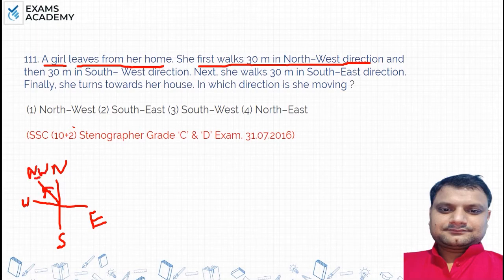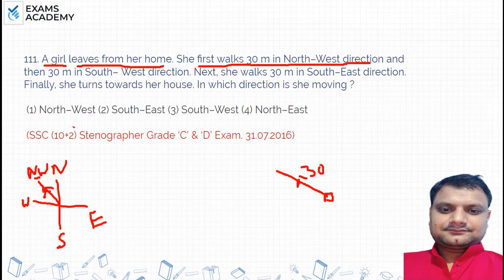So how did you go in the north-west direction? 30 meters. So if I say that this girl's home is here, she goes 30 meters in the north-west direction to reach this point. And then she walks 30 meters in the south-west direction.